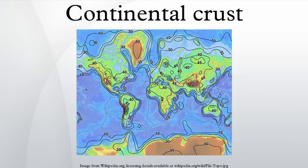Consisting mostly of granitic rock, continental crust has a density of about 2.7 grams per centimeter cubed and is less dense than the material of Earth's mantle, which consists of ultramafic rock and whose density is about 3.3 grams per centimeter cubed. Continental crust is also less dense than oceanic crust, whose density is about 2.9 grams per centimeter cubed.